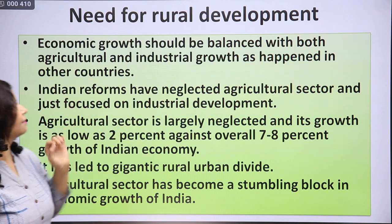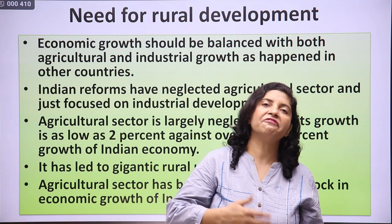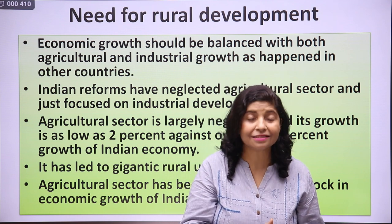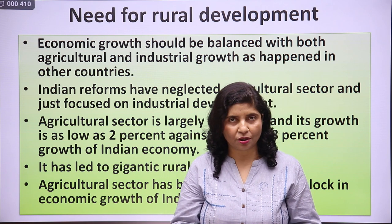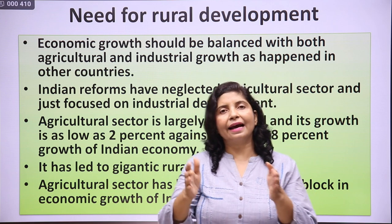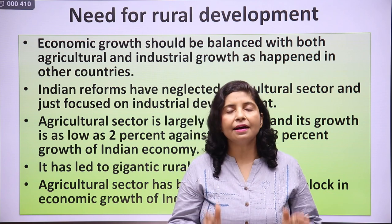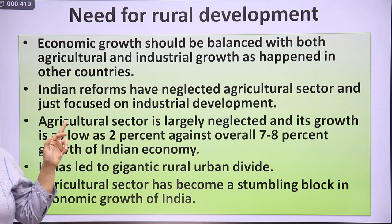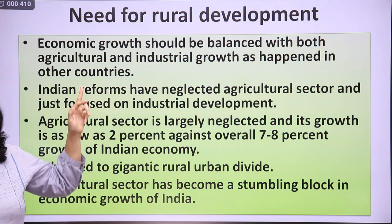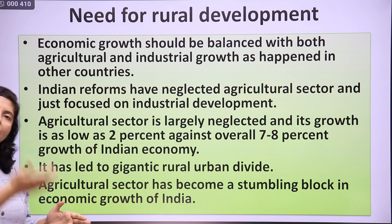Economic growth should be balanced with both agricultural and industrial growth, as happened in other countries. In India, we are growing very fast — India has become the 5th largest economy in the world, but still its rural areas are lagging behind. Only urban areas and cities are developing, so it is unbalanced growth. In other nations, rural areas and the agricultural sector also grow alongside the industrial sector. When India started its new economic policy, it neglected the agricultural sector. Only industries were taken care of, but the agricultural sector lagged behind, leading to unbalanced growth.